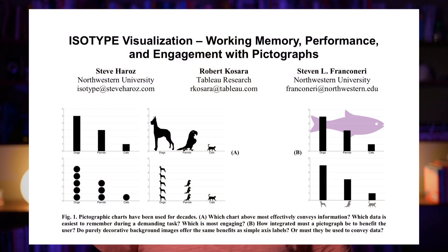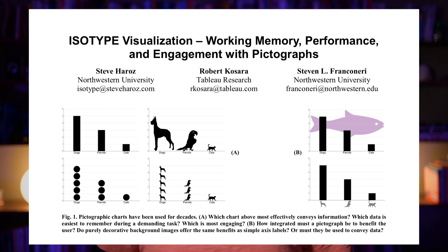I've done research with Steve Franconeri and Steve Haroz showing that isotype charts are actually very good for memory — it's much easier for people to remember what they saw in isotype charts than in plain bar charts or other chart types labeled with images or text. We also found that people were no worse at reading isotype charts than bar charts, even though these symbols are more complex.